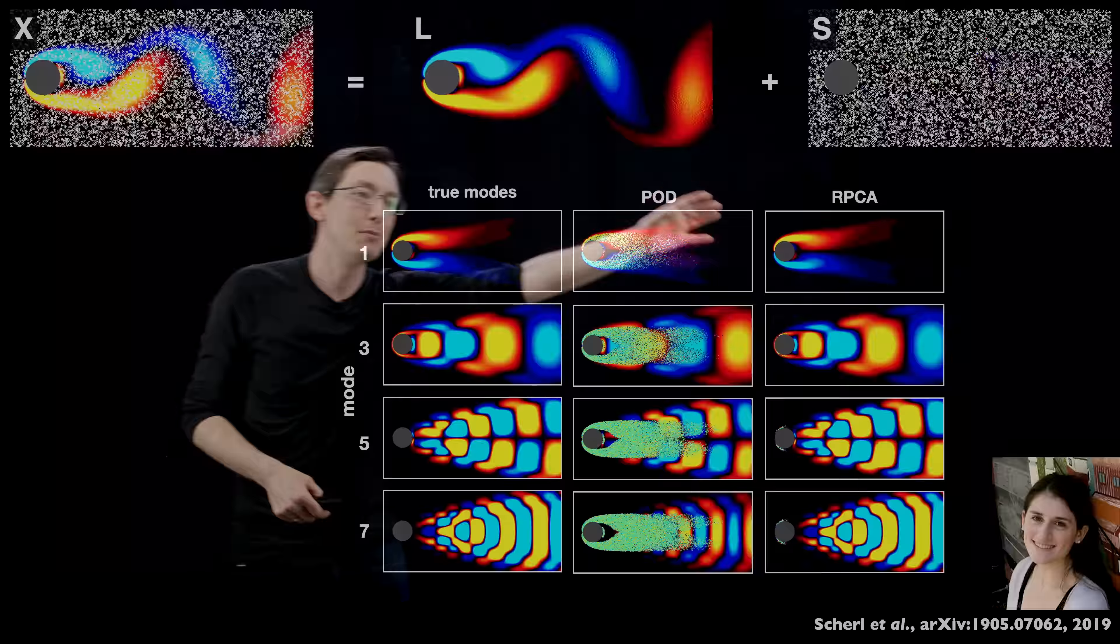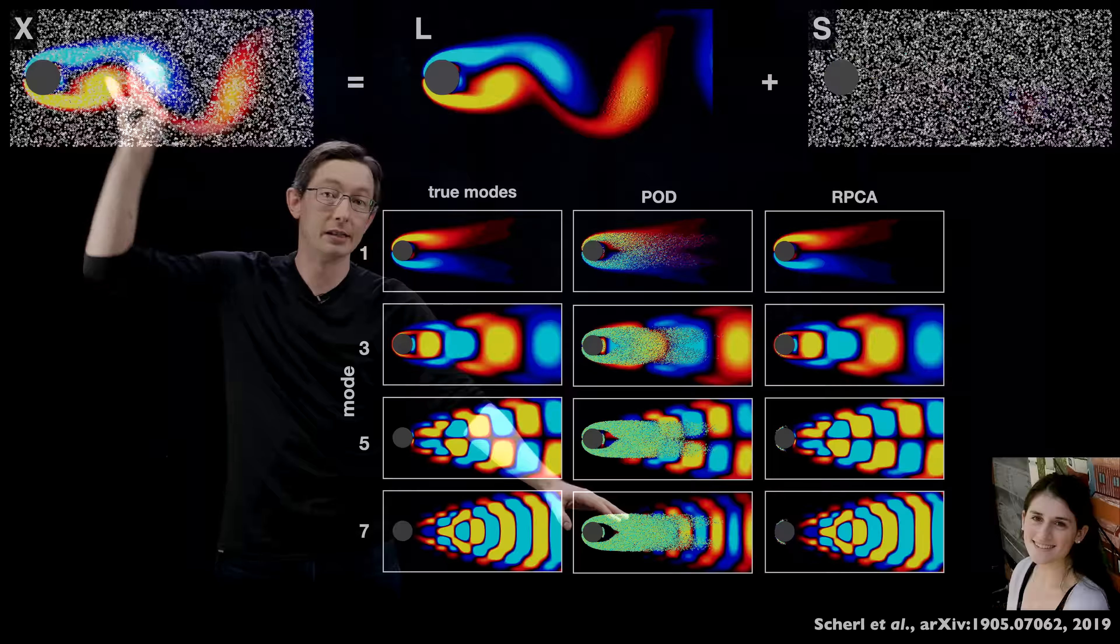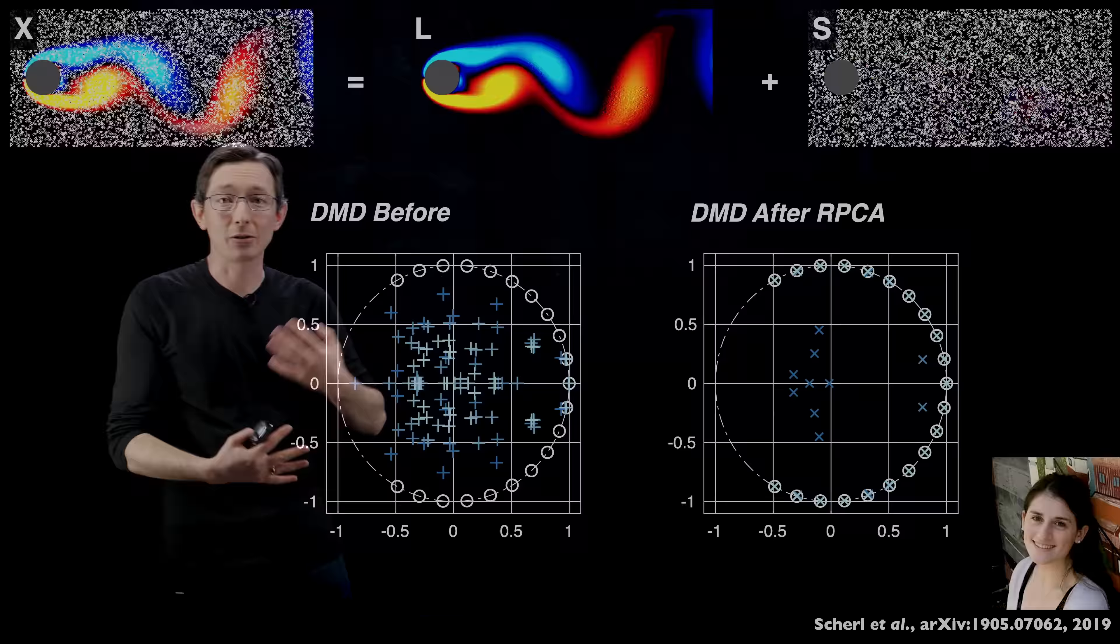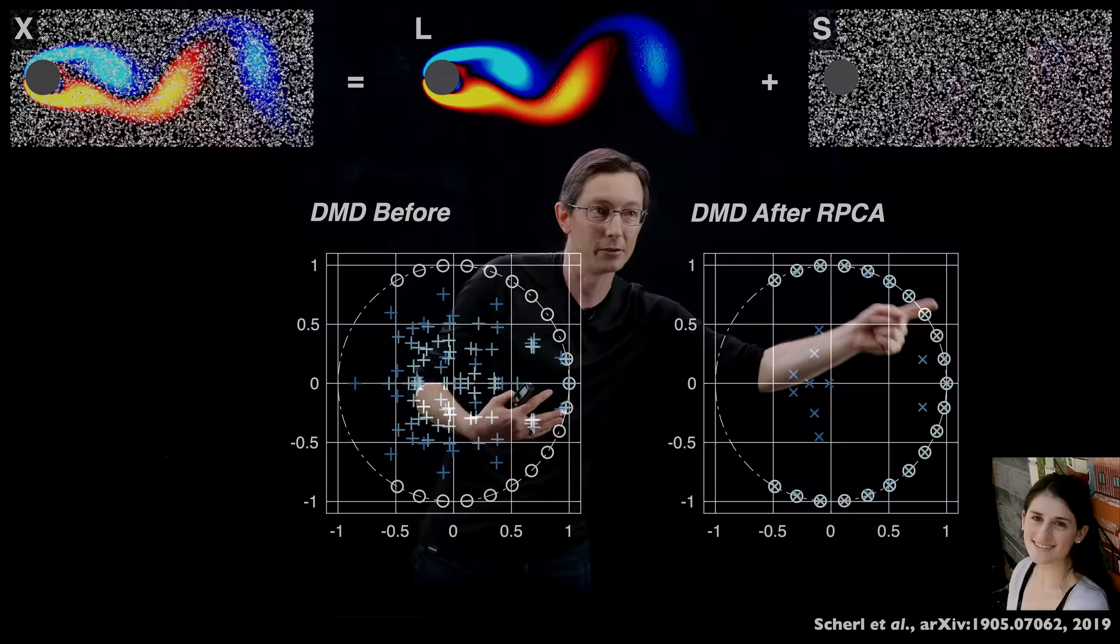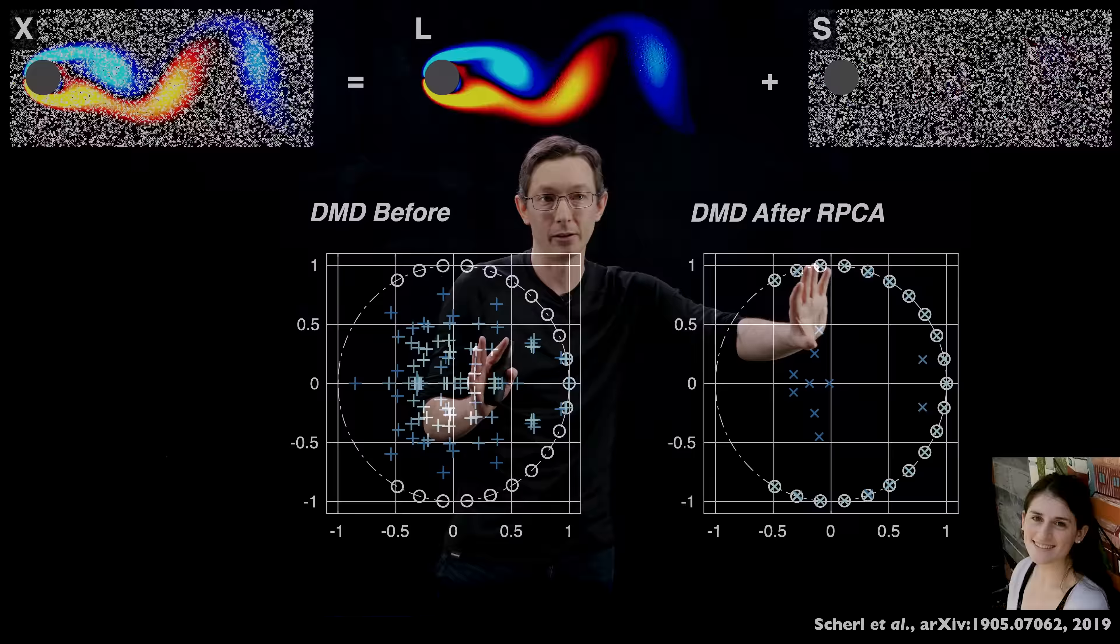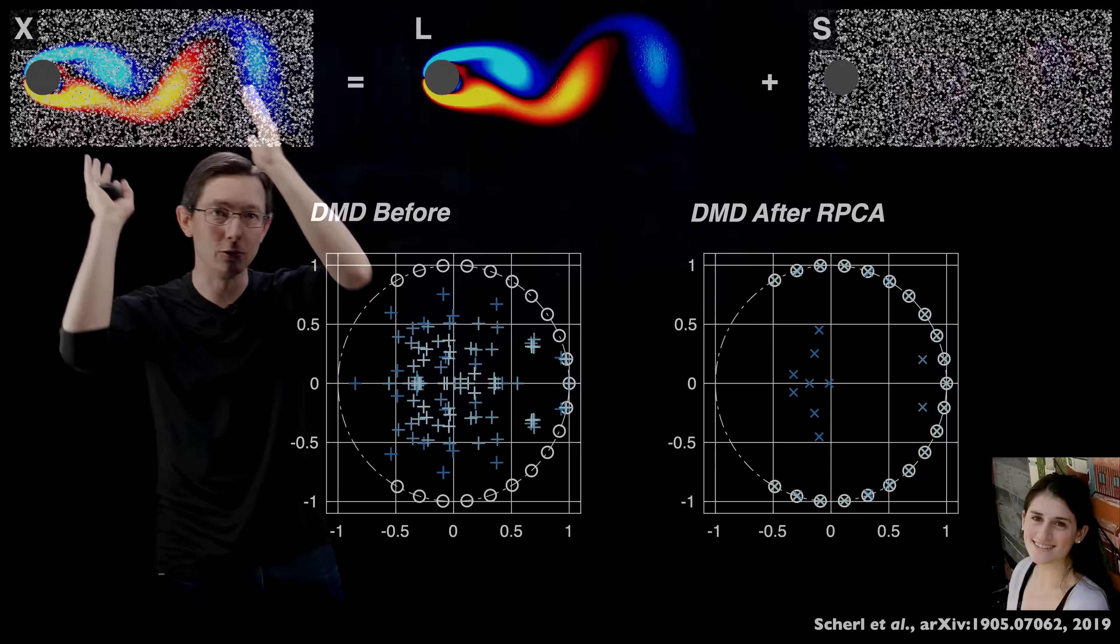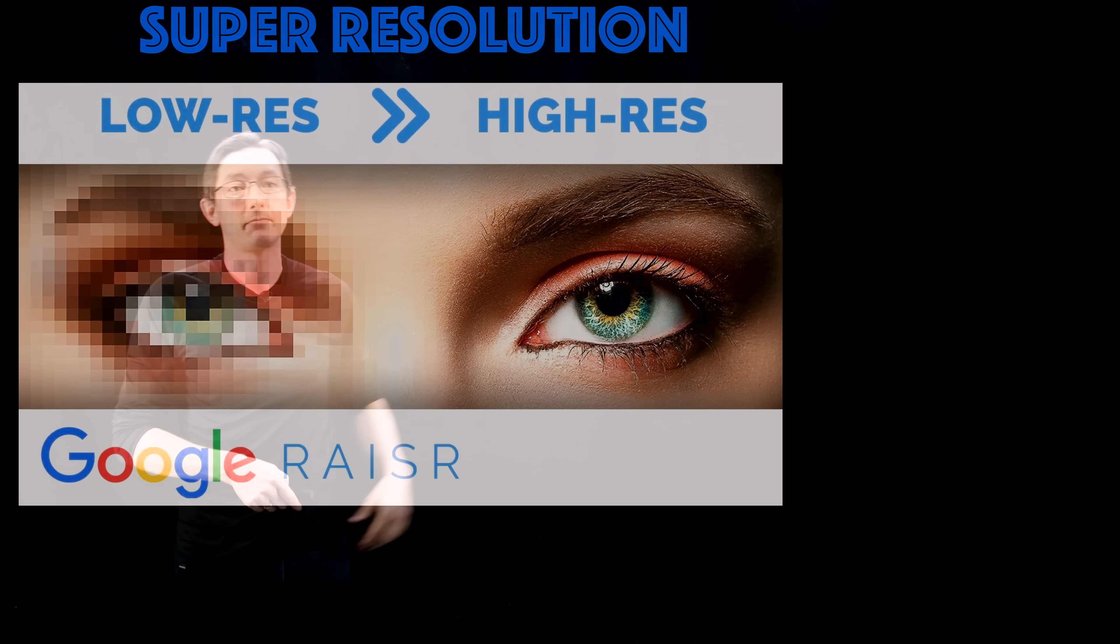Once you have this low rank matrix, you can get much better approximations of those POD modes. These are the true modes here, this is what would happen if you did POD on this noisy data, and this is what you get when you run POD on Isabel's filtered low rank matrix L. You get much better modes and patterns. When you build dynamical systems models to predict how this movie evolves in time, you get much better models. We know that all these eigenvalues should live on this unit circle because it's a periodic flow. After filtering we get a really good dynamic mode decomposition model where most of the eigenvalues are on the circle, but if you naively apply that algorithm directly to this data you would get a terrible representation of the dynamics - almost none of the eigenvalues are on this unit circle where they should be.